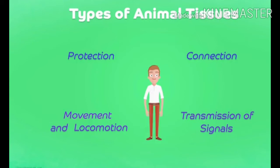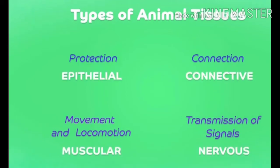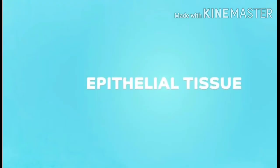The first tissue function is protection — they protect the body. Another helps in movement and locomotion. Another connects the internal organs of the body, and the last one helps to transfer signals to the brain. So protection tissue is called epithelial tissue, meaning it is related to the skin. Movement and locomotion is related to our muscles, which are joined with the bones. Connective tissue connects the organs, and the nervous system — the brain — helps to transfer different signals, that is the nervous tissue.